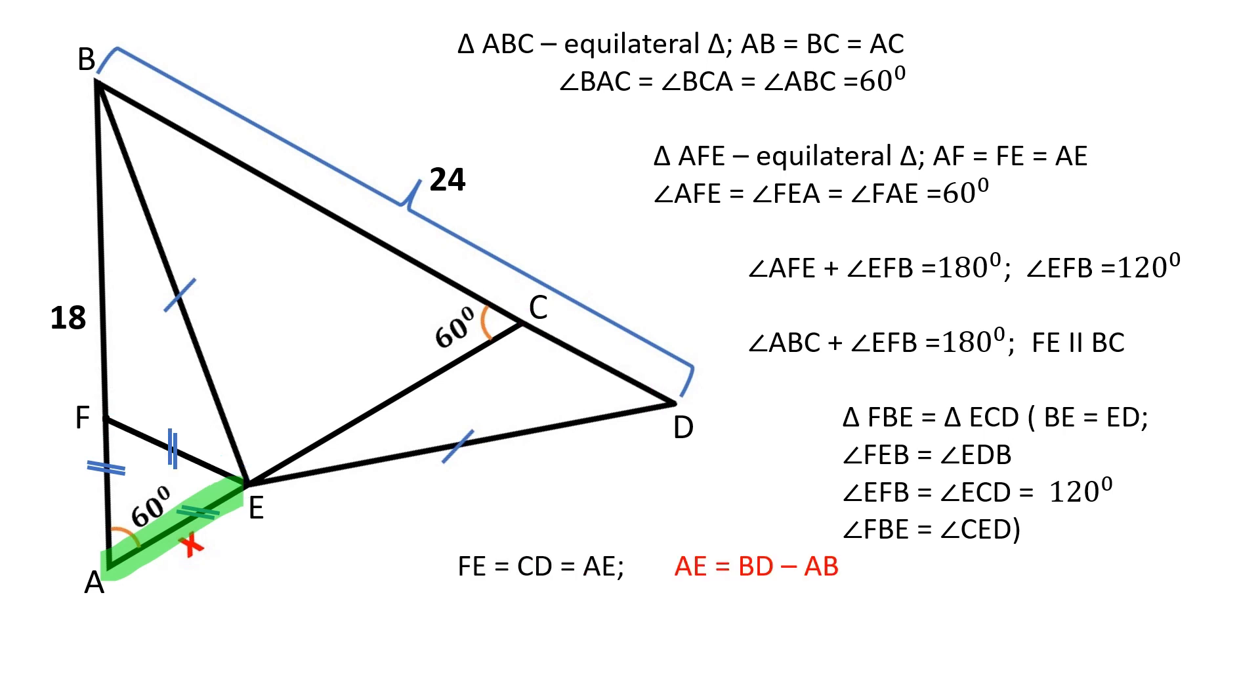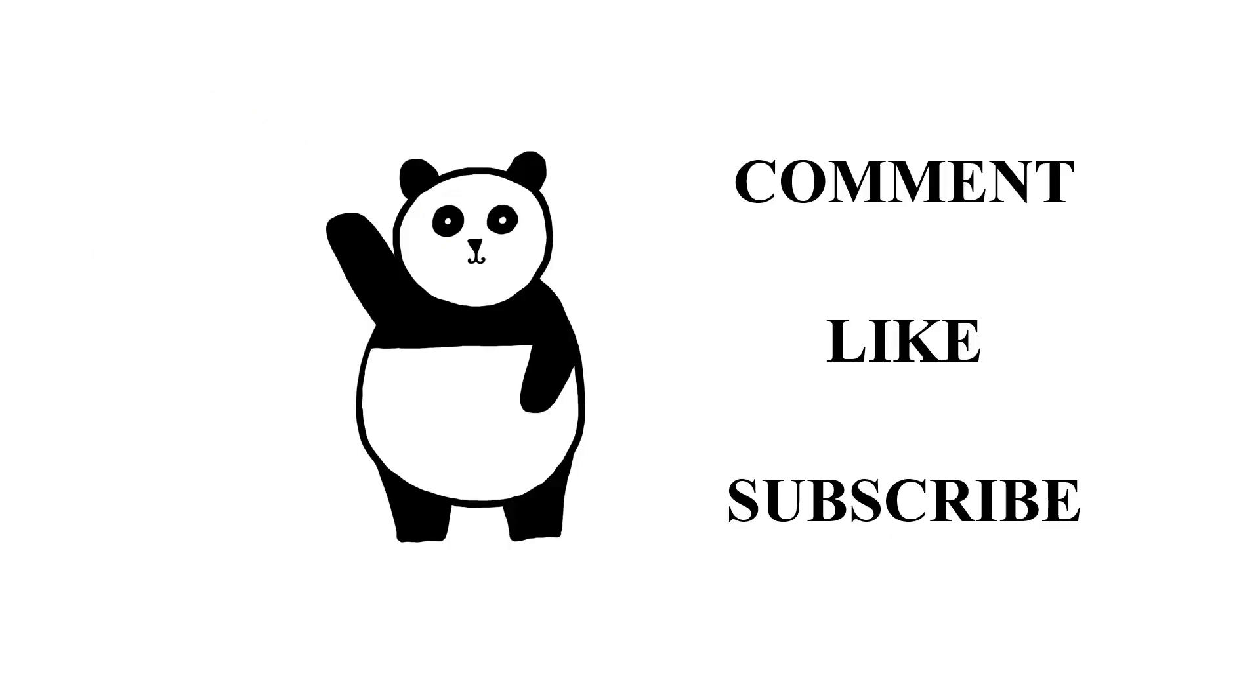AE is equal to BD minus AB, which is equal to 6.